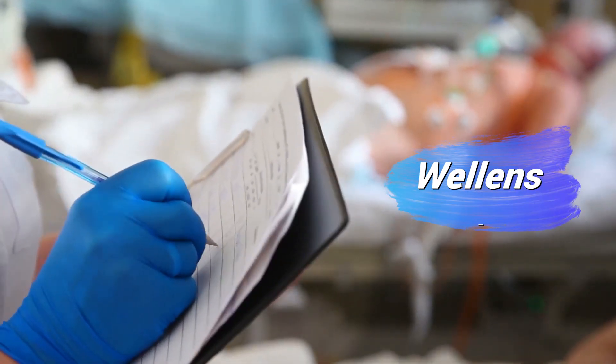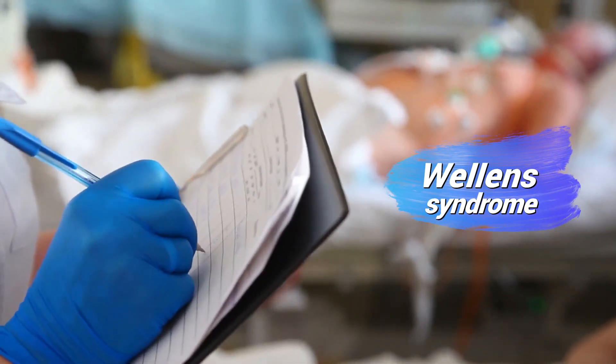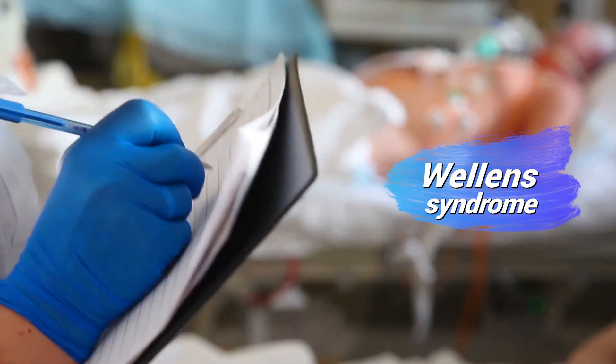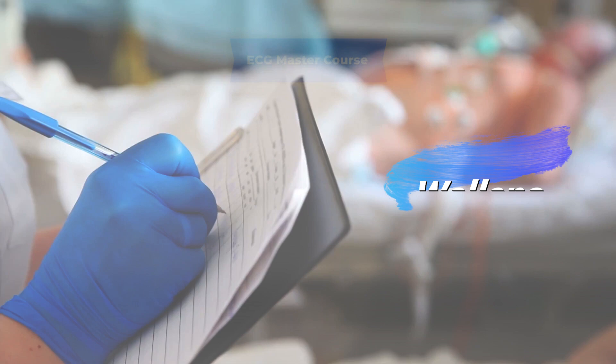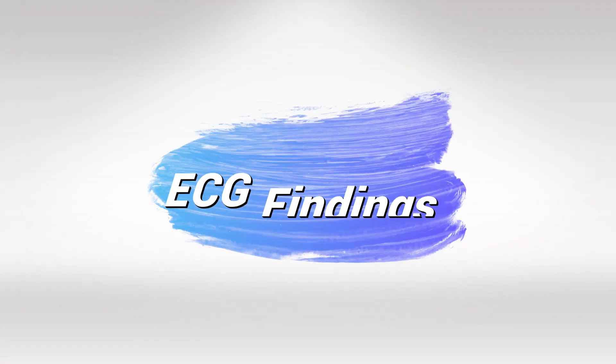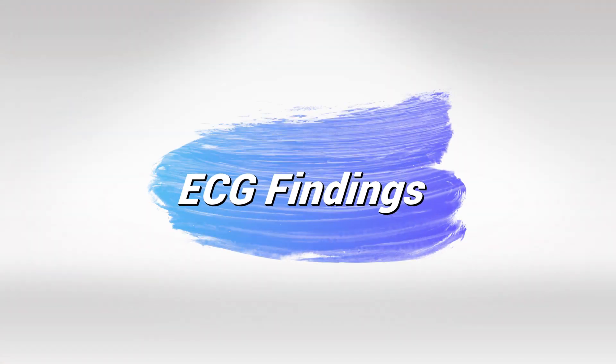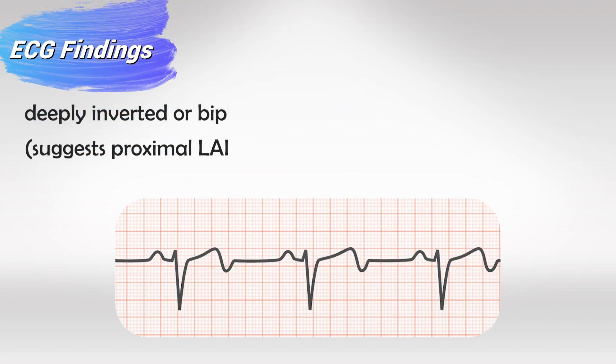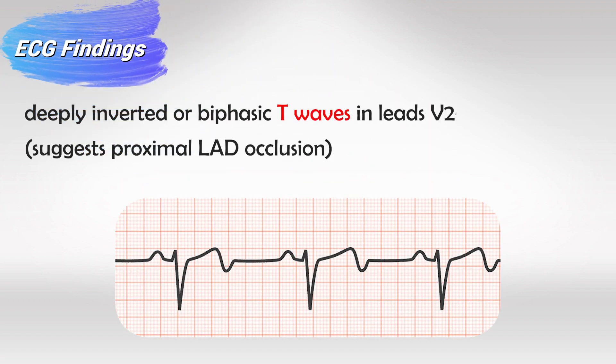Welcome back. In this video, I'll teach you everything that you need to know about Wellens syndrome. It is very common to see in the emergency department and it is very easy to recognize. There are essentially some ECG findings that occur in leads V2 and V3 that are suspicious of some coronary artery stenosis.